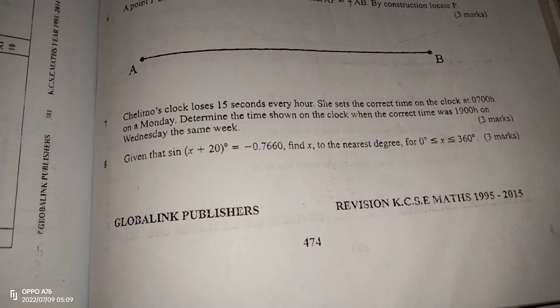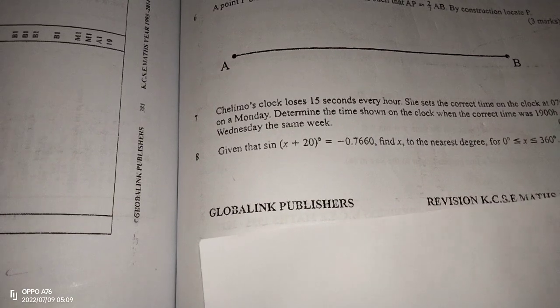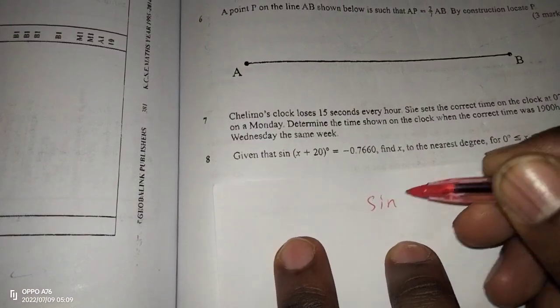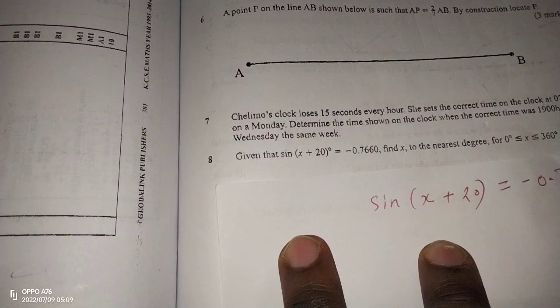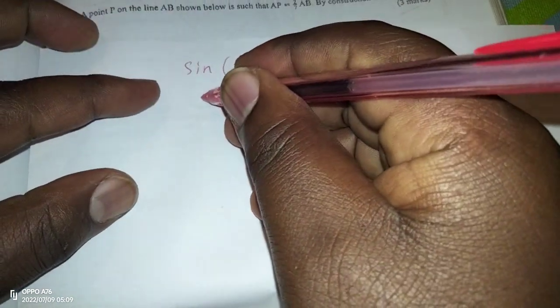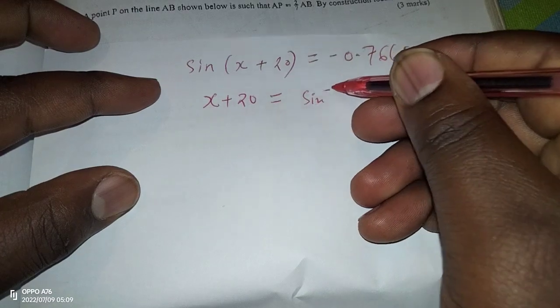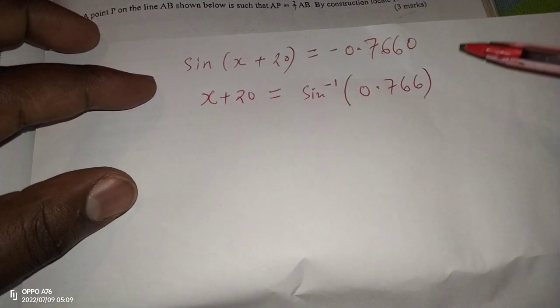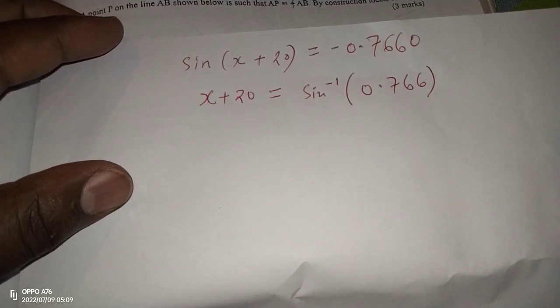Let's look at the possible values of x within 0 and 360, whereby the sine of x plus 20 equals negative. So what we do is, first of all, if sine of x plus 20 equals negative 0.7660, then we can say that the value of x plus 20 is going to be the sine inverse of 0.766. Let's first forget the acute angle whose sine is 0.766. The negative will guide us to locate the quadrant in which that acute angle is laying.